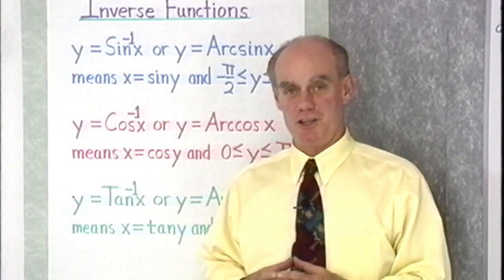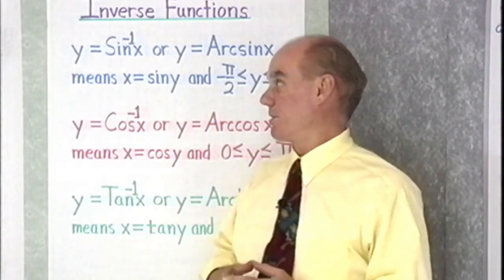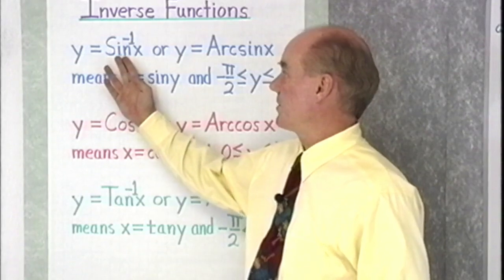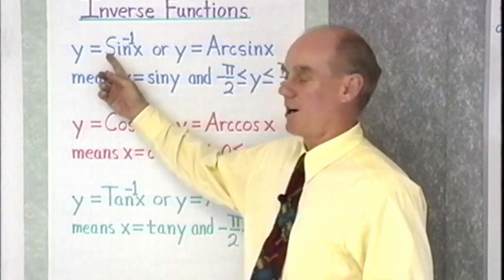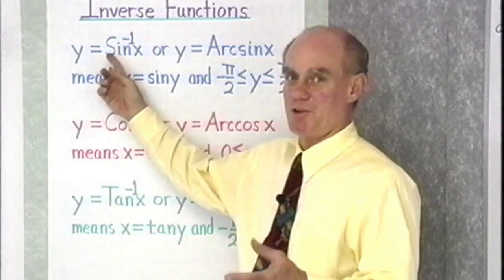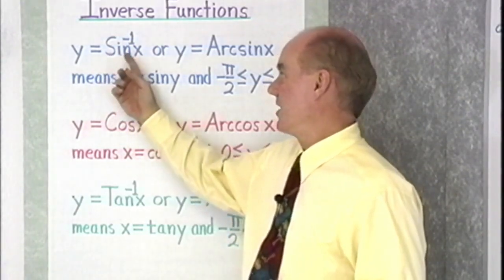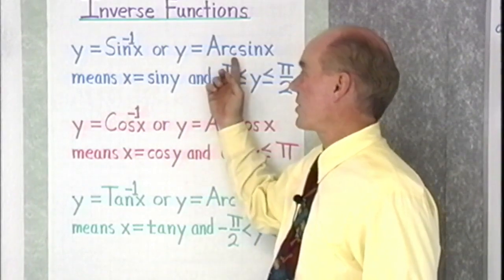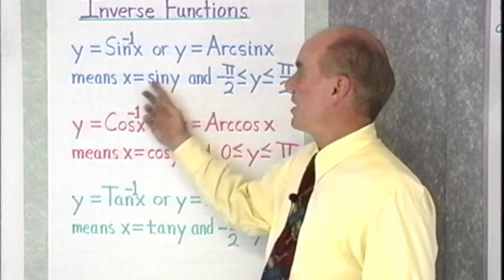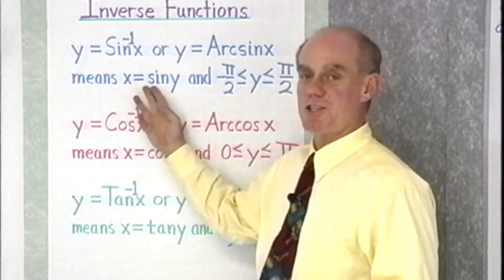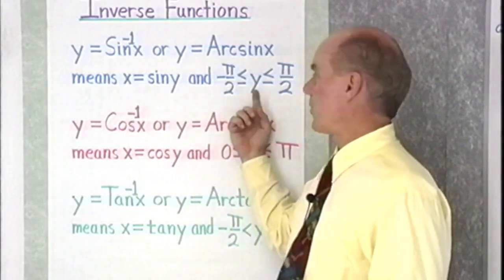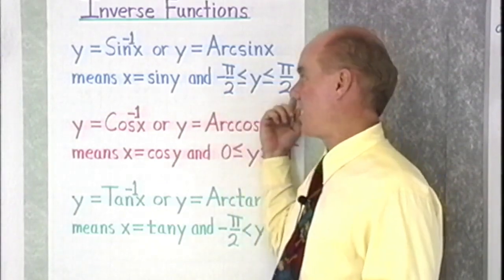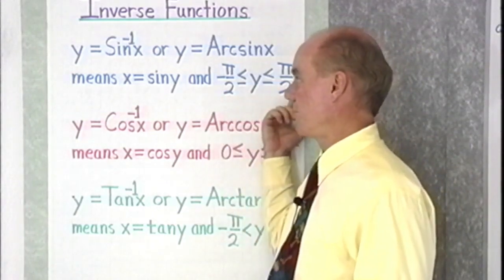Over here, I've written the definitions for the inverse trigonometric functions. y is equal to the inverse sine of x — it should be a small letter — inverse sine x, or y equal arc sine x, means that x is equal to the sine of y, and y is between negative pi over 2 and positive pi over 2.